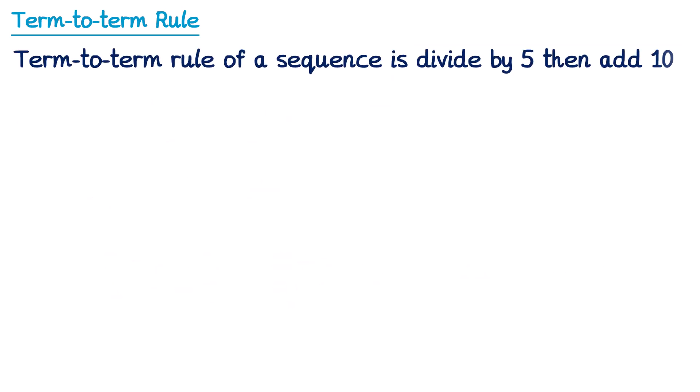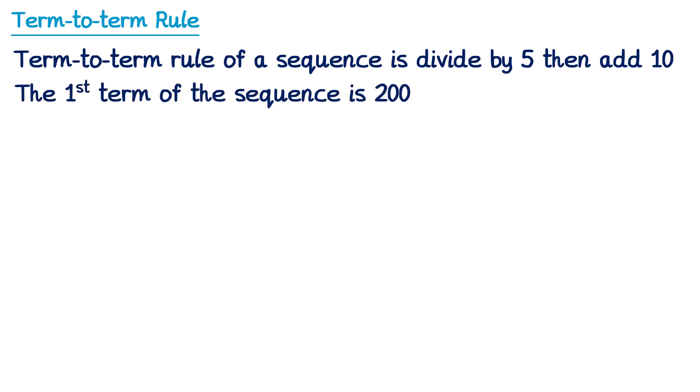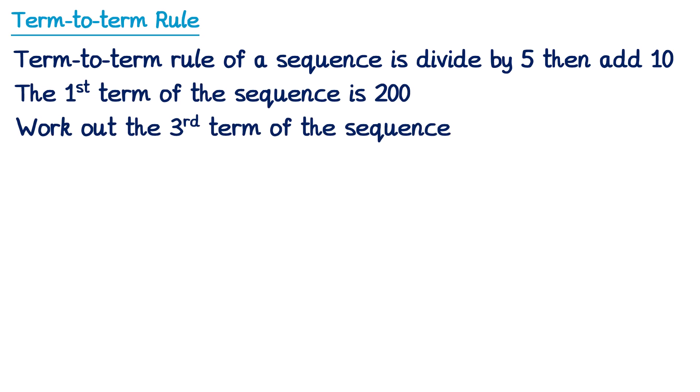Let's try another example like this one. So this time the term-to-term rule of the sequence is divide by 5, then add 10. We're told the first term is 200, and we need to work out the third term again. So notice again this one has two parts to its term-to-term rule. We're going to divide by 5, and then add 10.